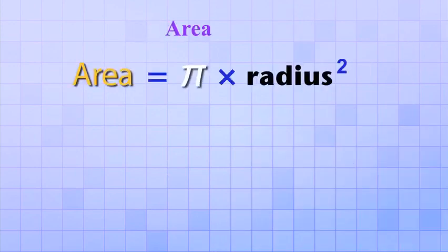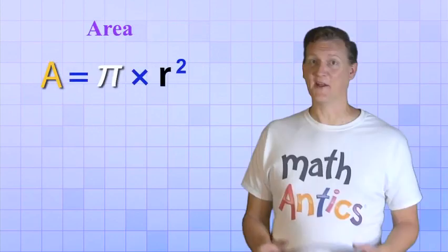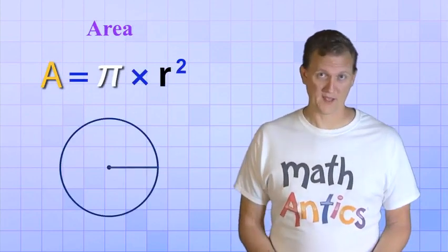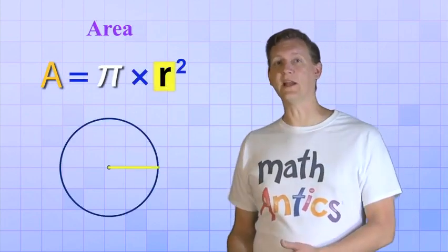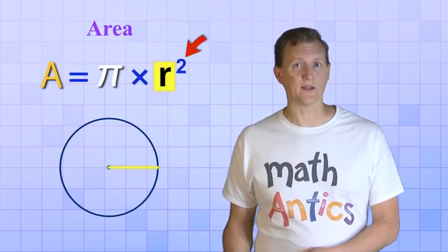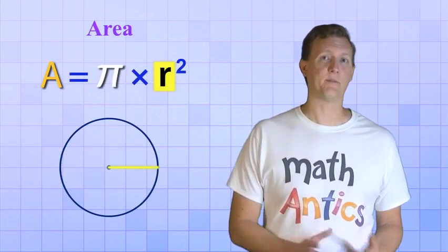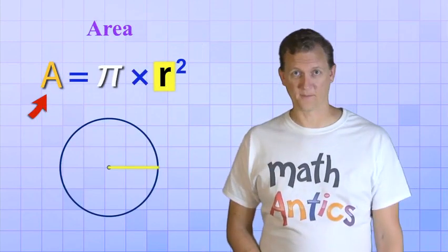The formula for finding the area of a circle is area equals Pi times radius squared. Again, we can use abbreviations to make it shorter. A for area and R for radius. Now this is a pretty simple formula too. It tells us that if we know the radius, we just have to square it and then multiply that times Pi to get the area.